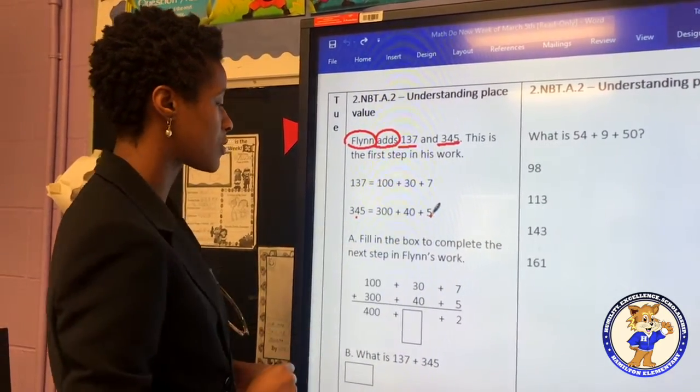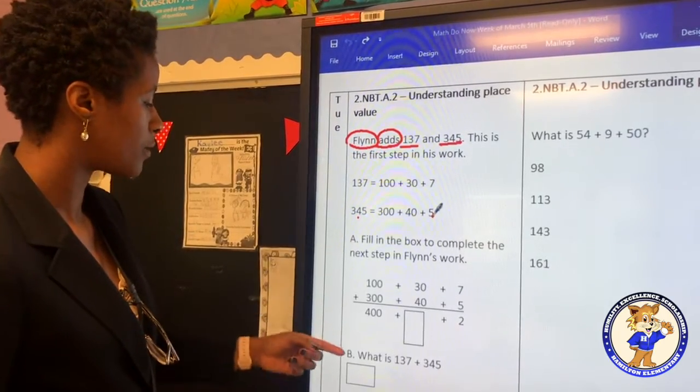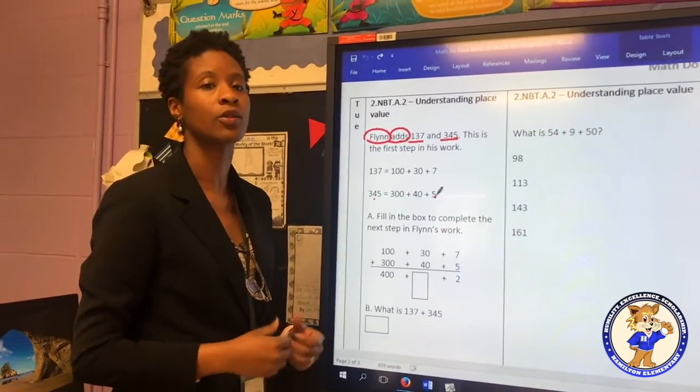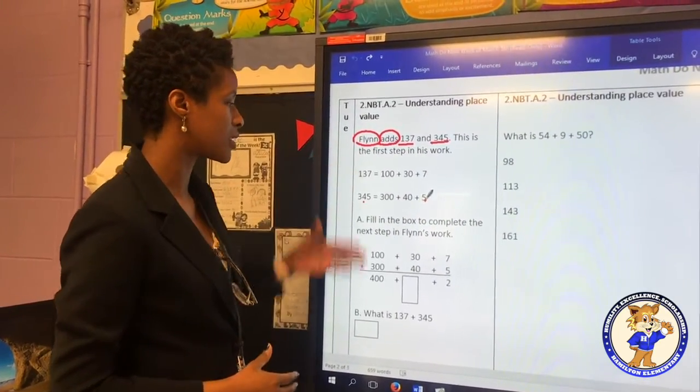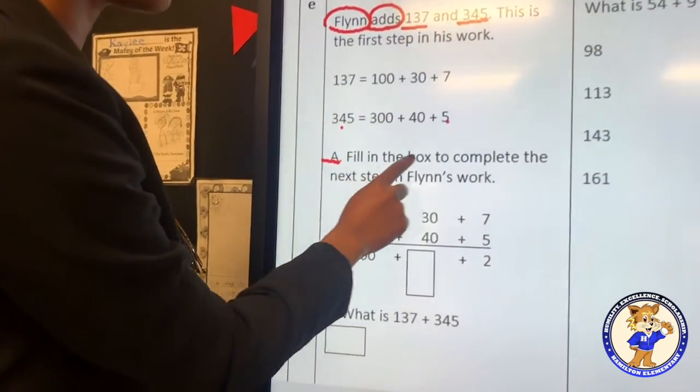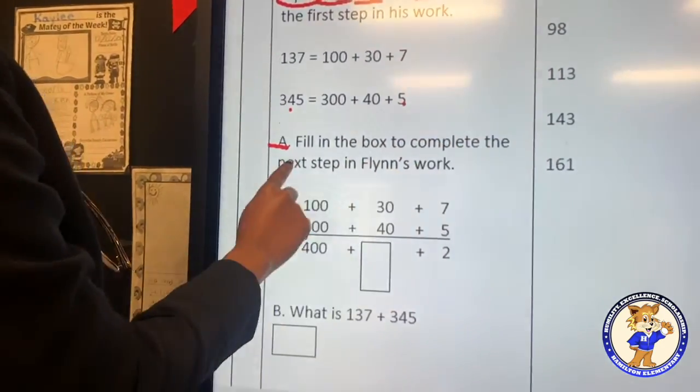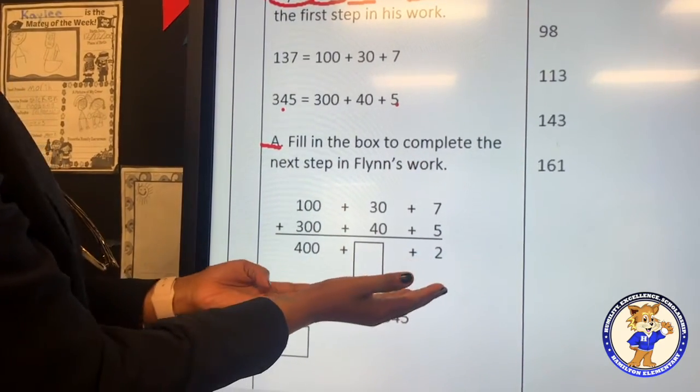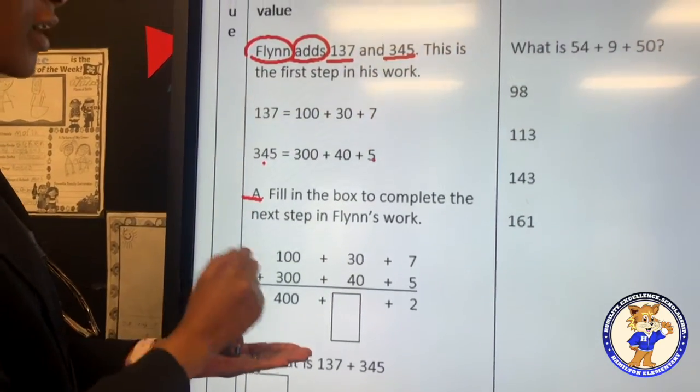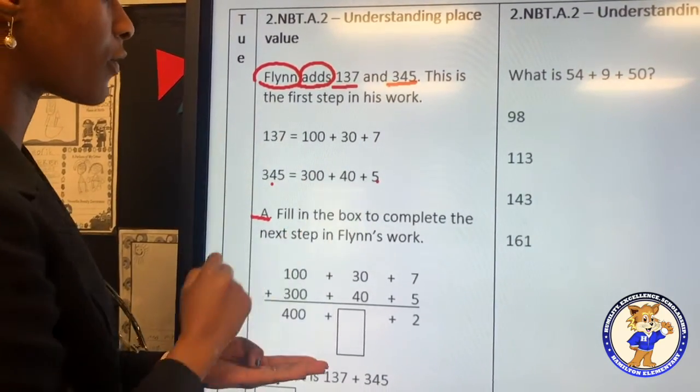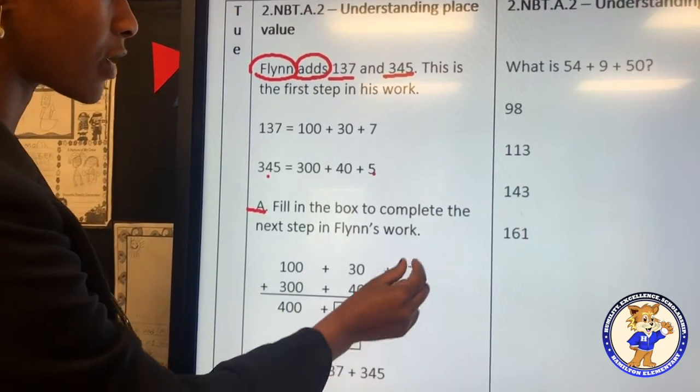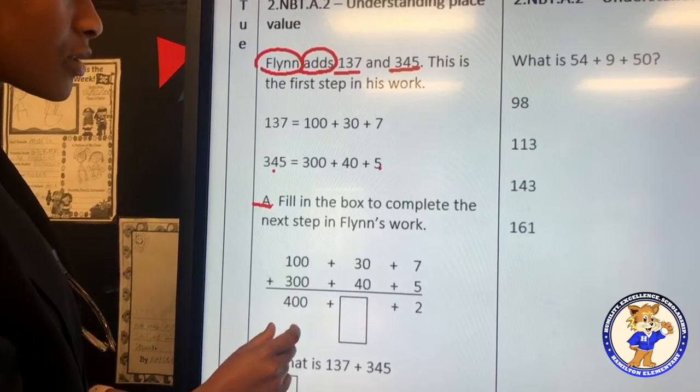This problem involves two parts. All parts must be solved in order to master this one standard. Part A says that we must fill in the box to complete the next step in Flynn's work. So here is Flynn's work again. He has taken his numbers here in the expanded form version and wrote them down in the correct place value. Here are his ones, tens, and hundreds.